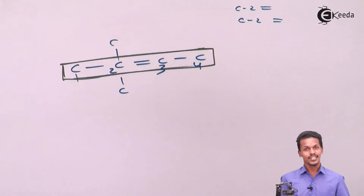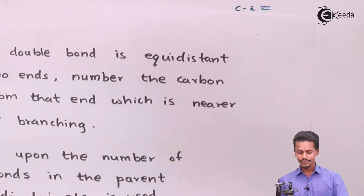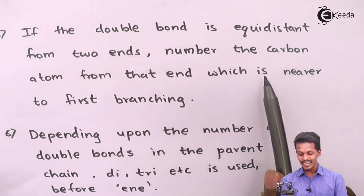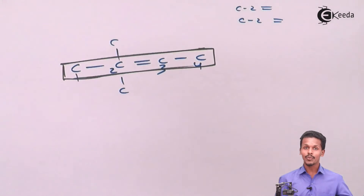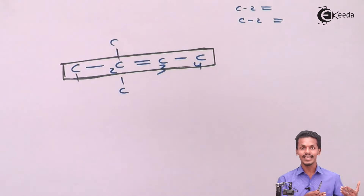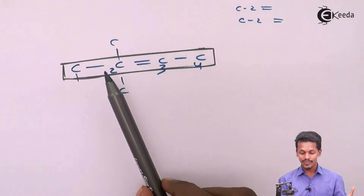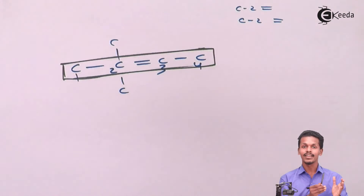So this is what we learned from the fifth rule. If the double bond is equidistant from two ends, we number the carbon atoms from that end which is nearest to the first branching — giving the branch the lower number. In both cases the double bond was equidistant, but we preferred the end where the branching gets a lower number and is nearer to that end.